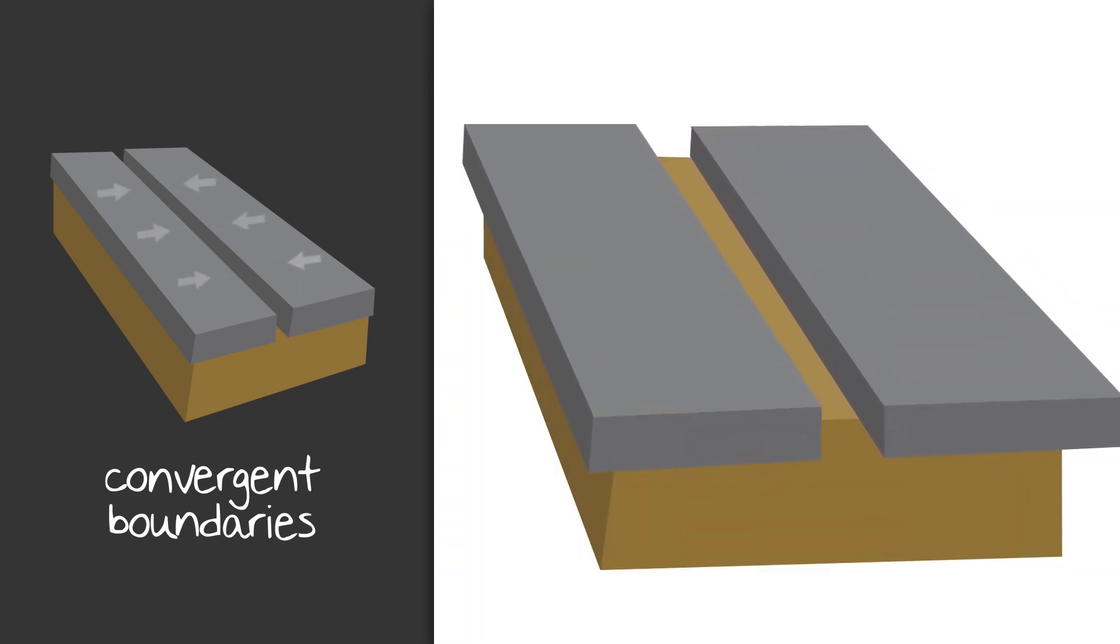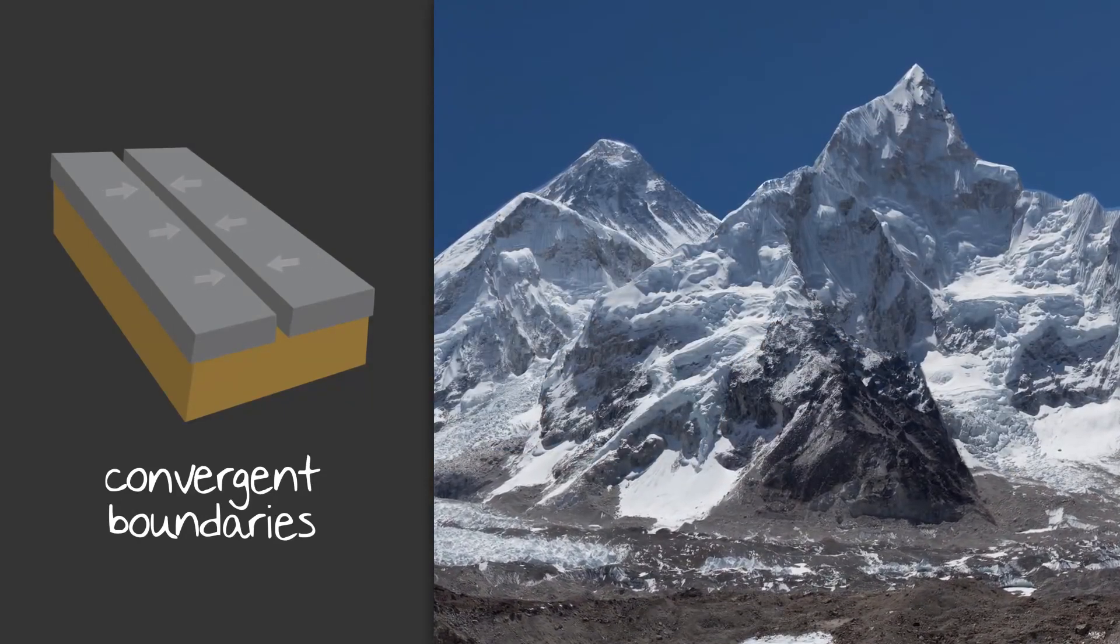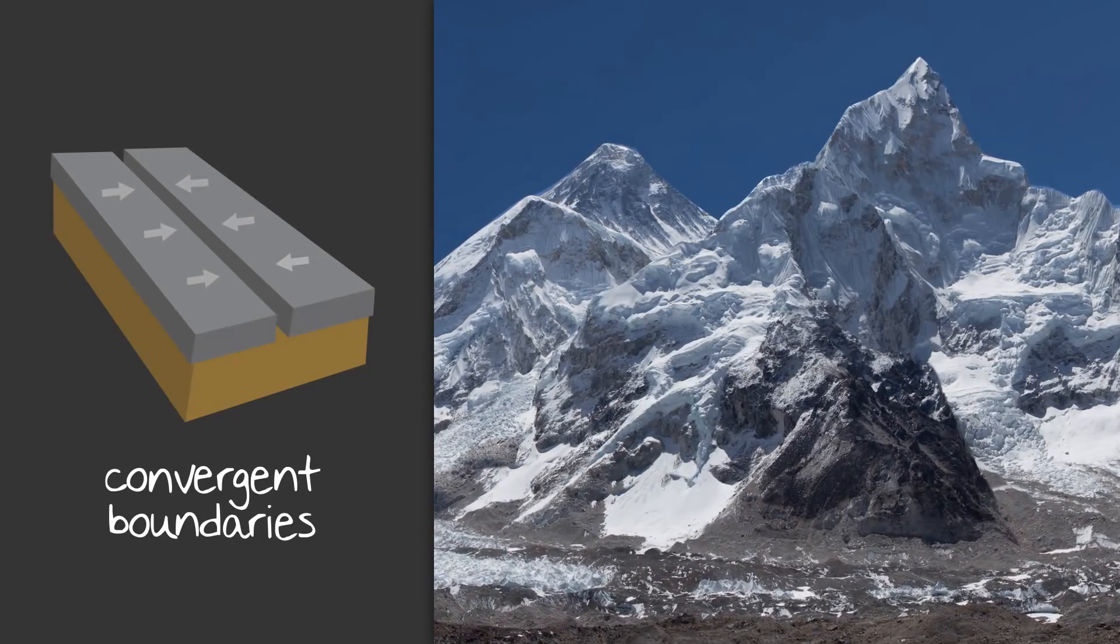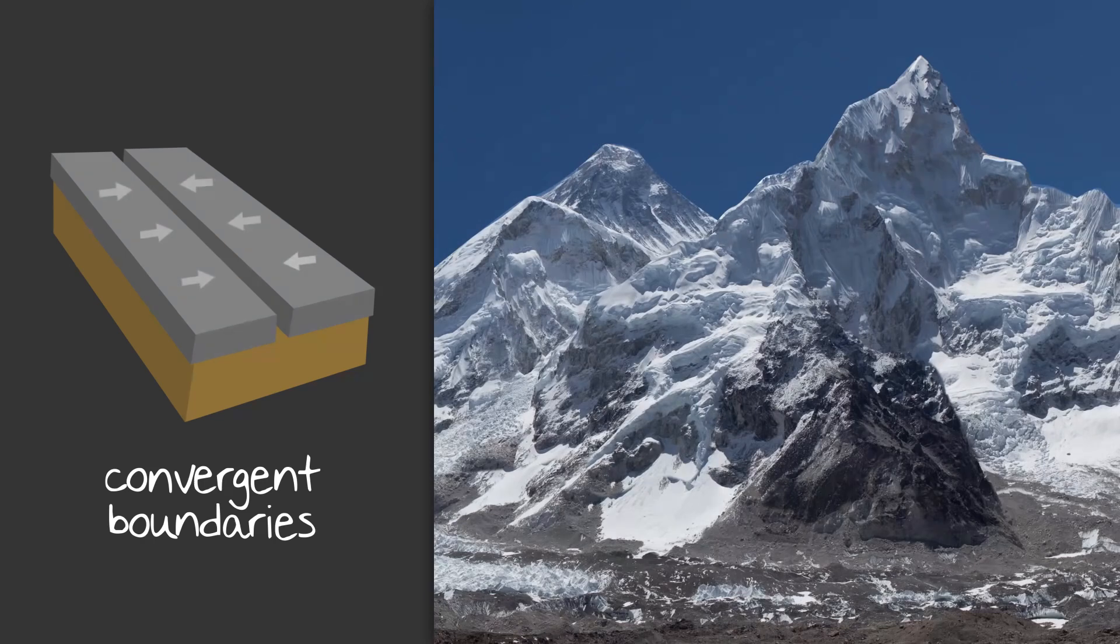The other thing that can happen when two plates press into one another at a convergent boundary is the rock above the boundary will be lifted up or folded and form mountains. Ever hear of the Himalayas? That's an example of two tectonic plates colliding. And because the plates continue to move, the peaks in this mountain range continue to grow. For example, Mount Everest, which currently measures around 29,000 feet, grows around an inch every year. So as you can imagine, it takes thousands of years for these mountains to form.